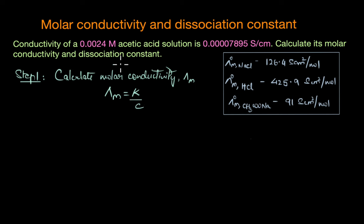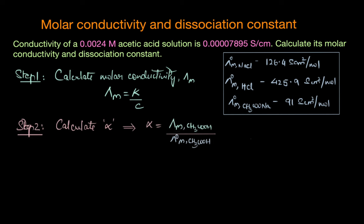The second part of the question asks for the dissociation constant. In order to find the dissociation constant, we need information on the degree of dissociation alpha. So the second step is calculating alpha. We can calculate alpha using the formula: molar conductivity of acetic acid divided by the limiting molar conductivity of acetic acid. You get the molar conductivity directly from step 1 and substitute it in the numerator. But how do we find the limiting molar conductivity?